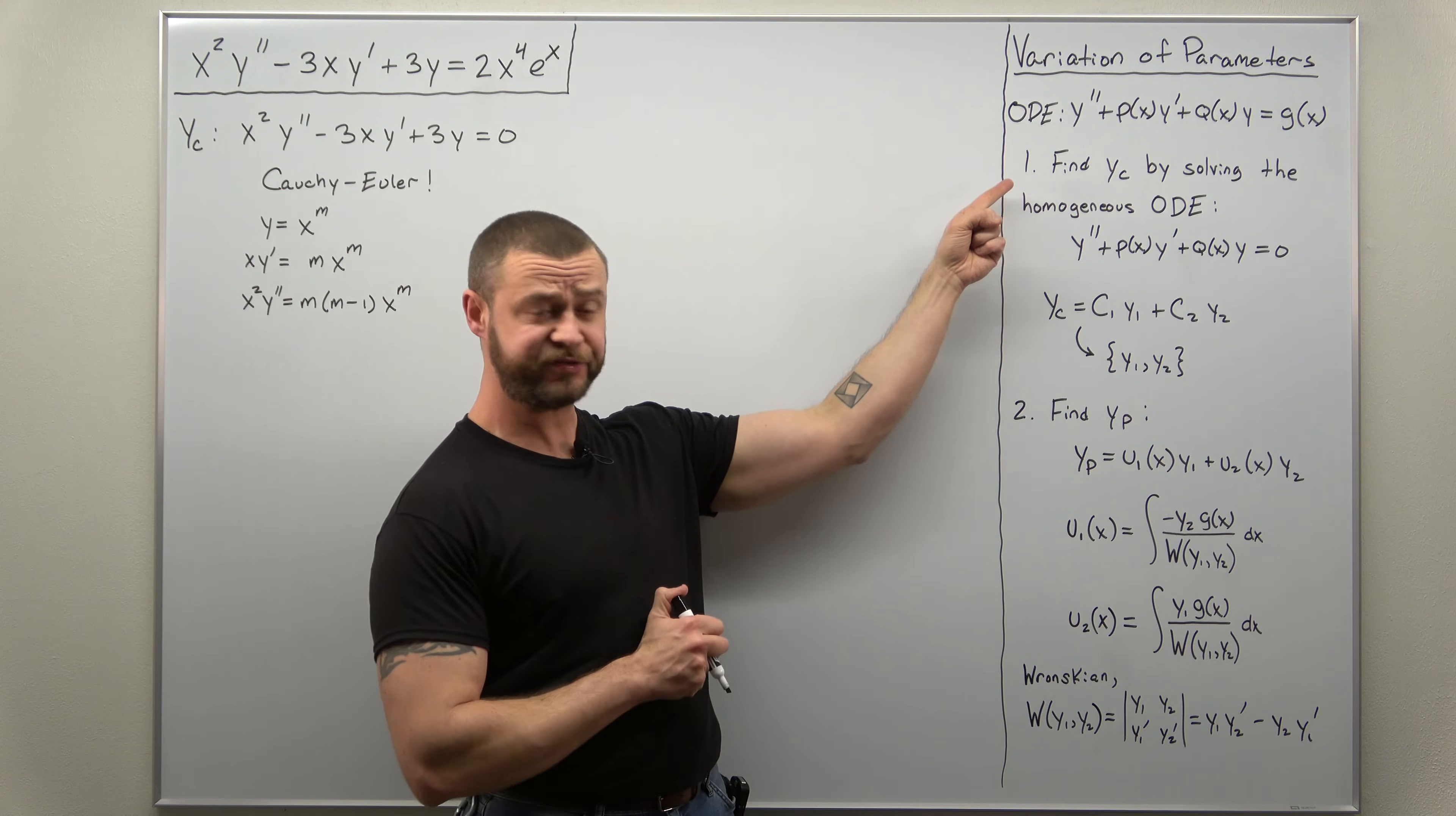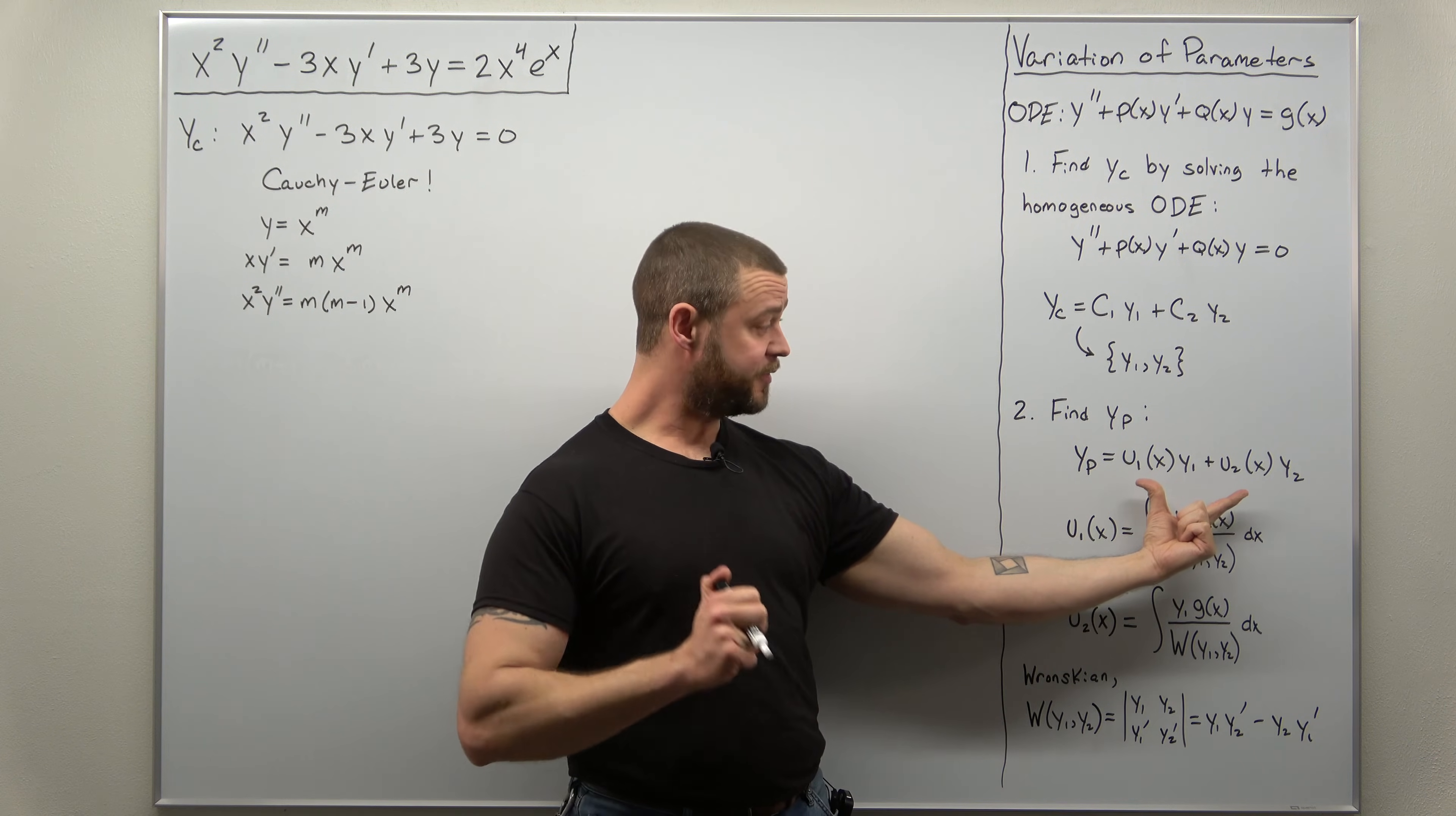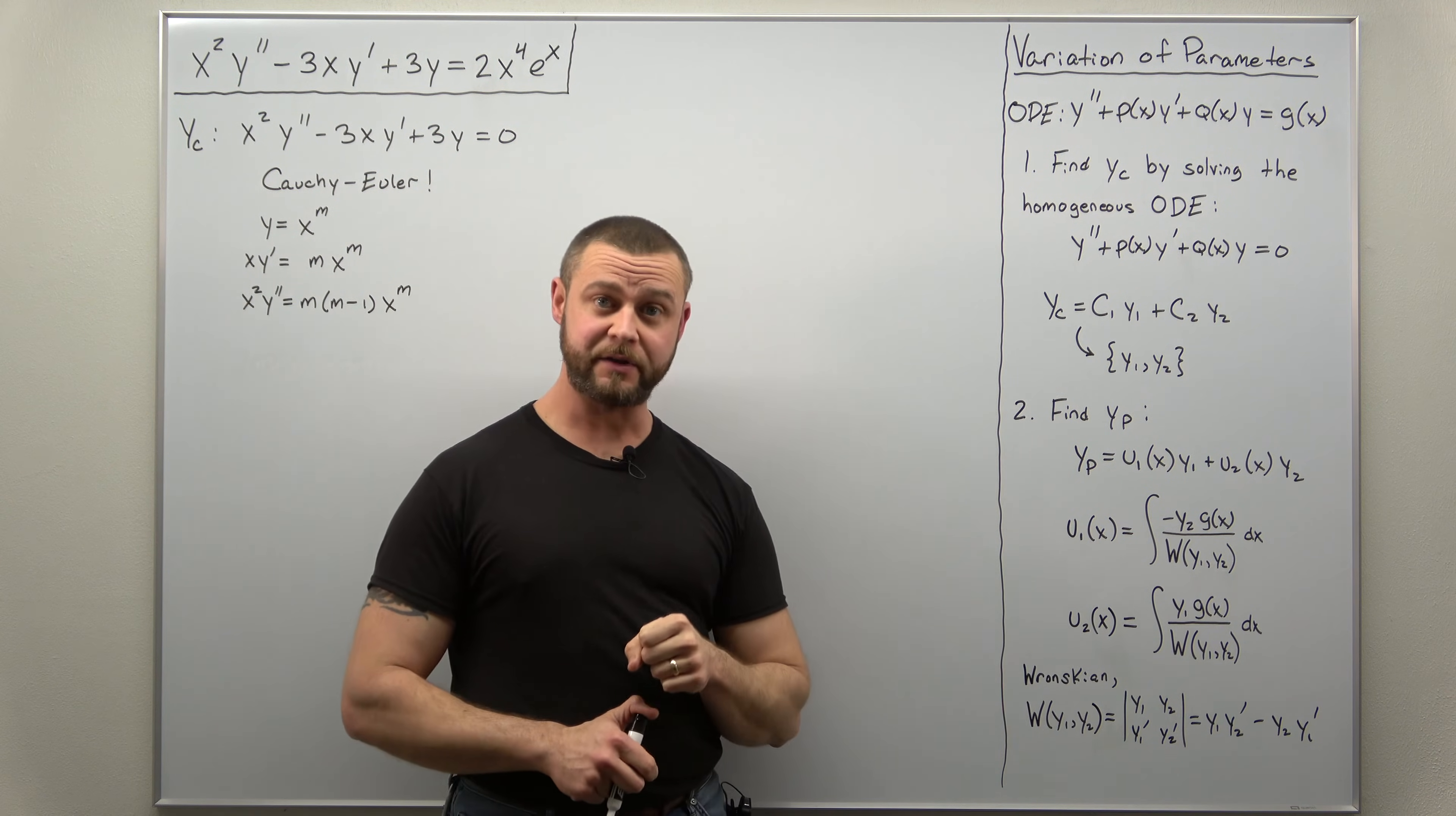So step one, we're going to find the complementary solution. Step two, with variation of parameters, finding your particular solution, you always have a solution of this form, U1 times Y1 and U2 times Y2, and you have nice integral formulas for U1 and U2. You just need to plug everything into them.